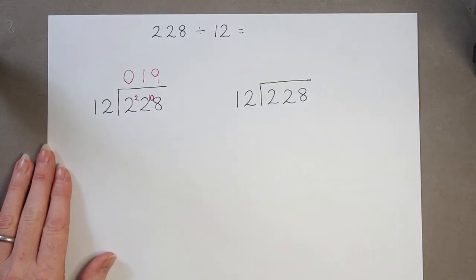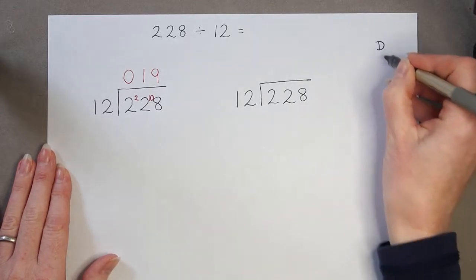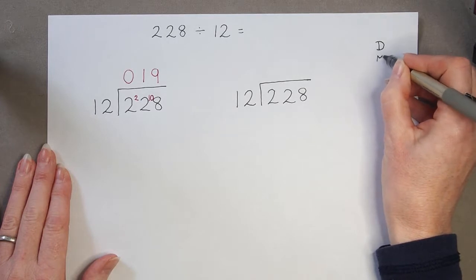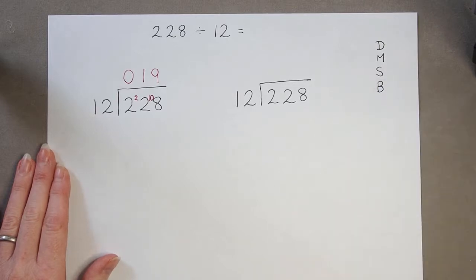Now, there is a little phrase which we can use to help us remember the order we need to do things in long division. And the letters we need to remember are D, M, S, and B.